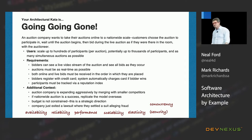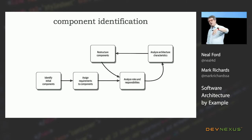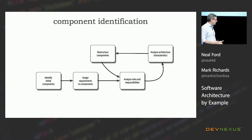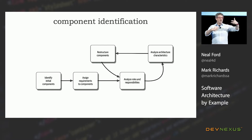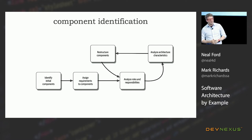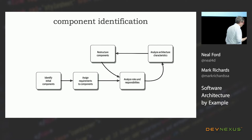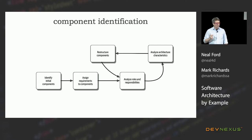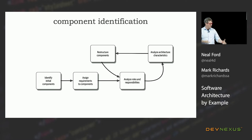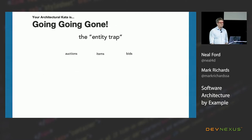Now let's tackle the other half of what we need to do: the logical architecture or domain design. This is a flowchart: identify initial components, assign requirements to components, look for roles and responsibilities, analyze those to see how well they fit the components, analyze architecture characteristics to see if they influence structure and granularity, then restructure and iterate. We're big believers in iterative design — I don't know any architects so clever that the correct granularity of components just falls out of their head.